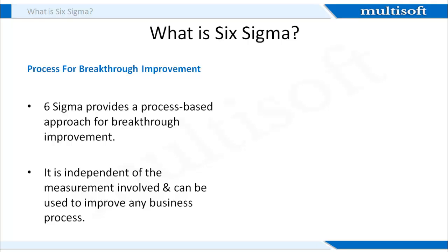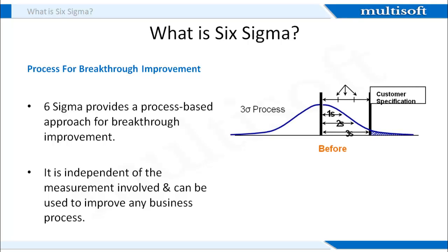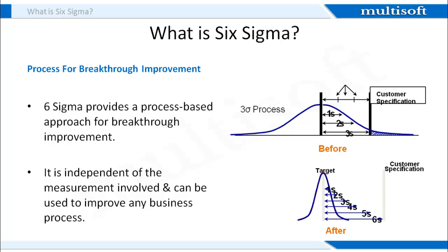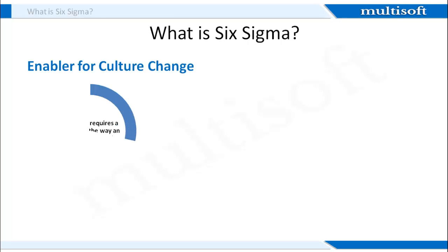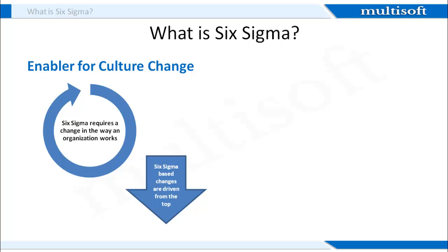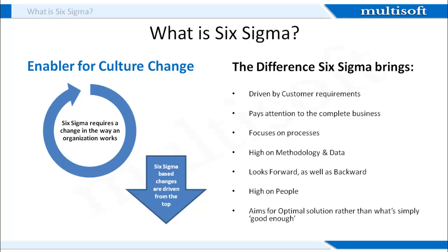Coming to the breakthrough improvement process, I will explain this with the help of an example. If you, as an HR manager, were to reduce the attrition rate of your organization by 2%, you could do this with the help of your experience, simpler methodologies and processes. However, if you set the target to reduce the attrition rate by 10%, it will be a breakthrough improvement target, and will be possible only if you effectively apply Six Sigma practices. Six Sigma requires a change in the way an organization works. Such changes are usually driven from the top and are a result of customer requirements. Six Sigma pays attention to the complete business, focuses on processes, and looks both forward and backward. The aim of Six Sigma processes is to find an optimal solution rather than settle for what's simply good enough.